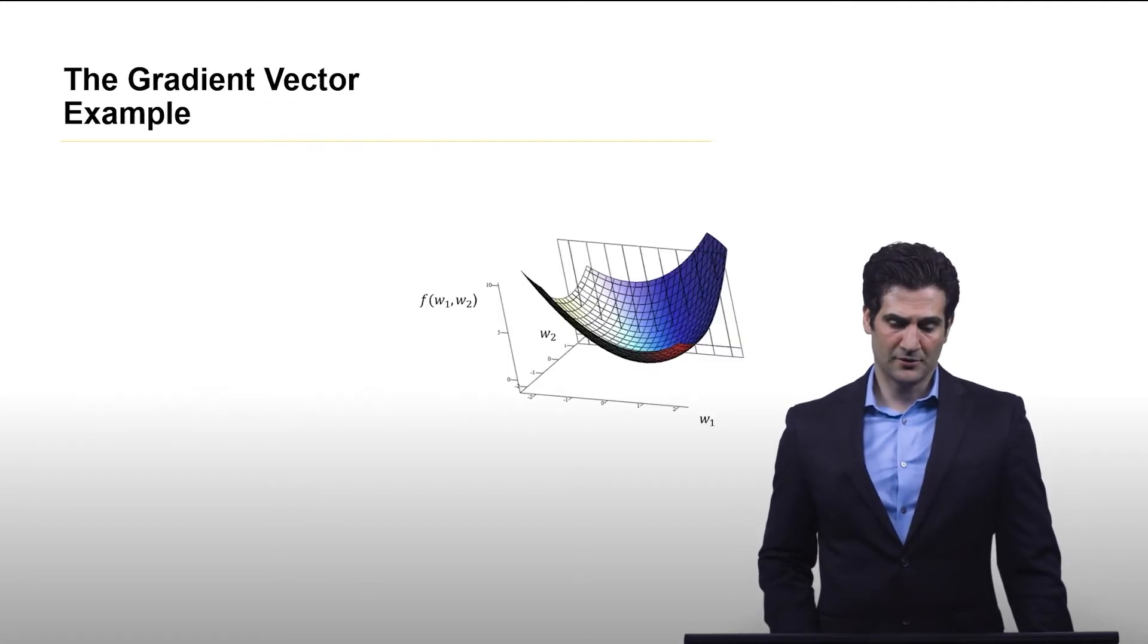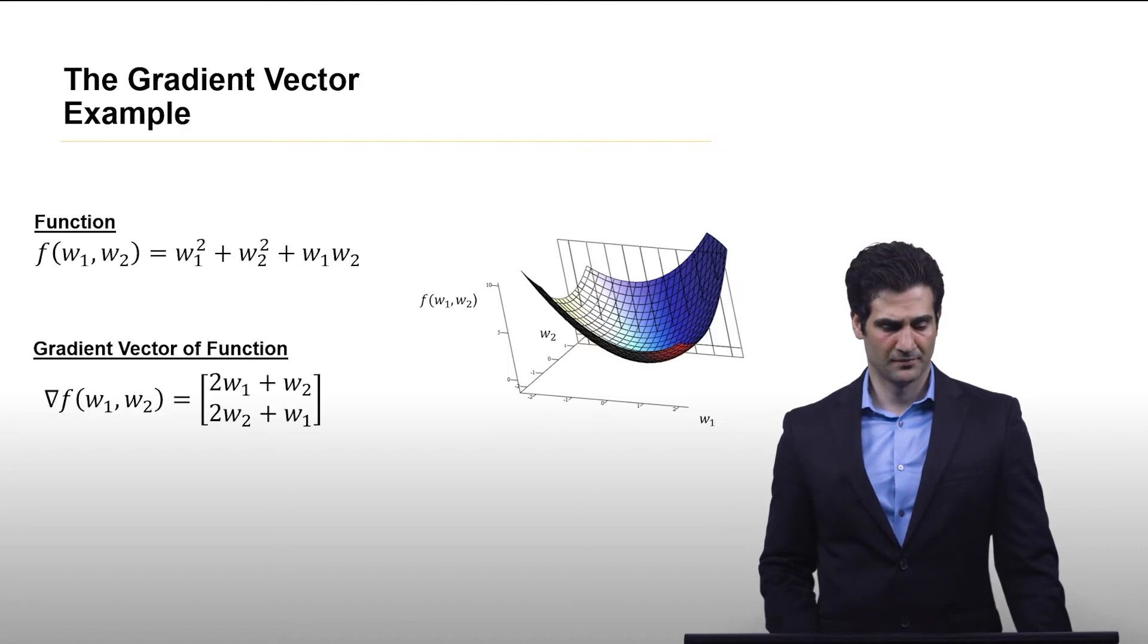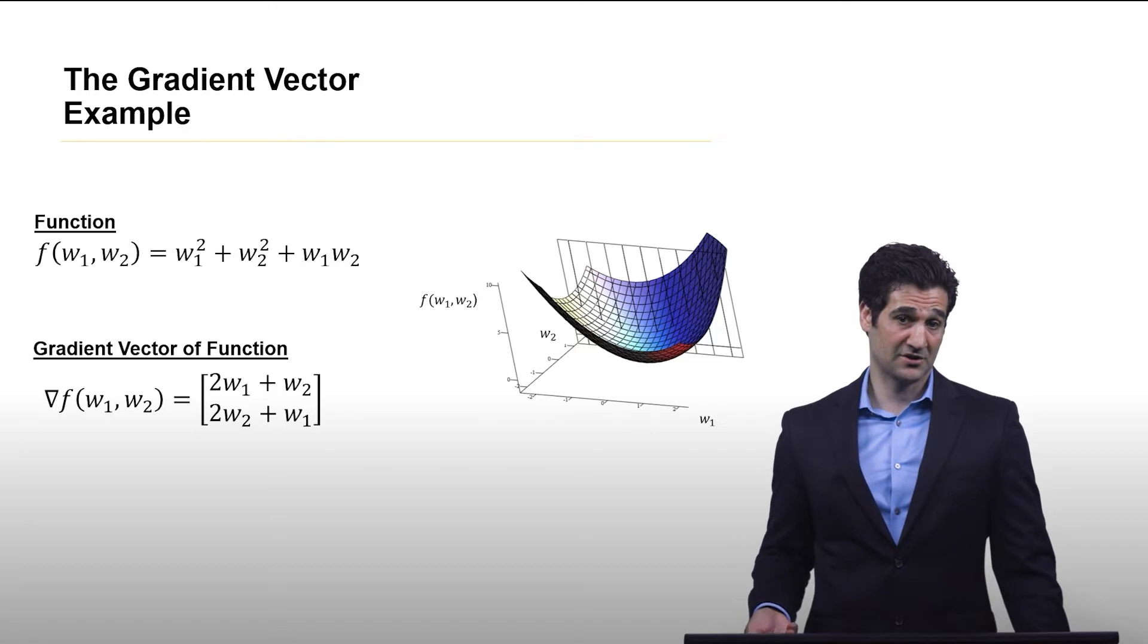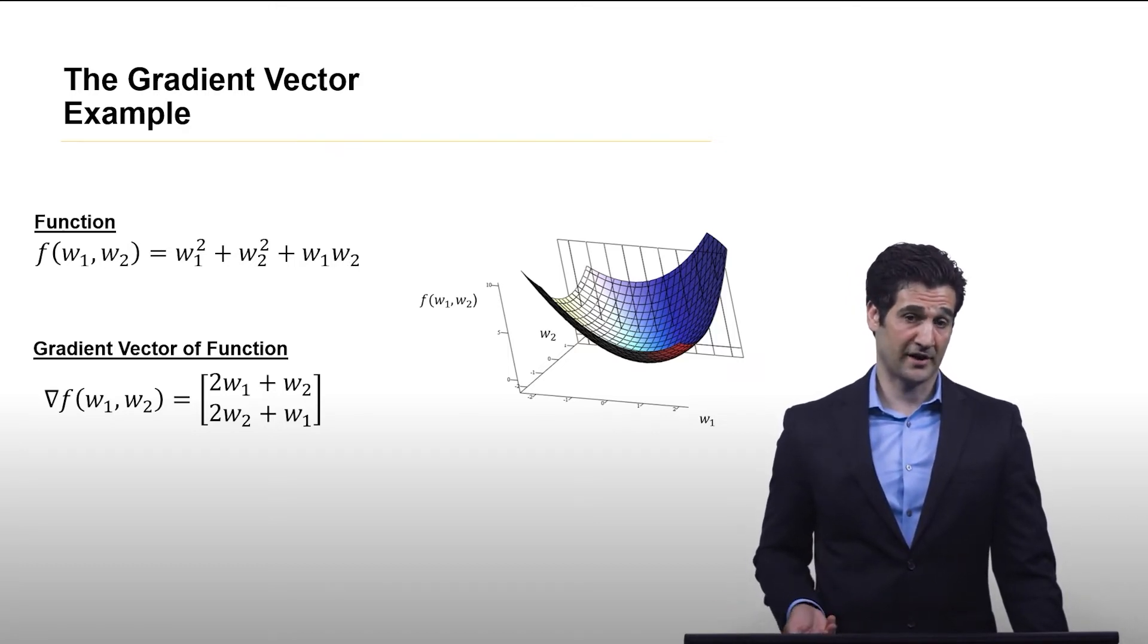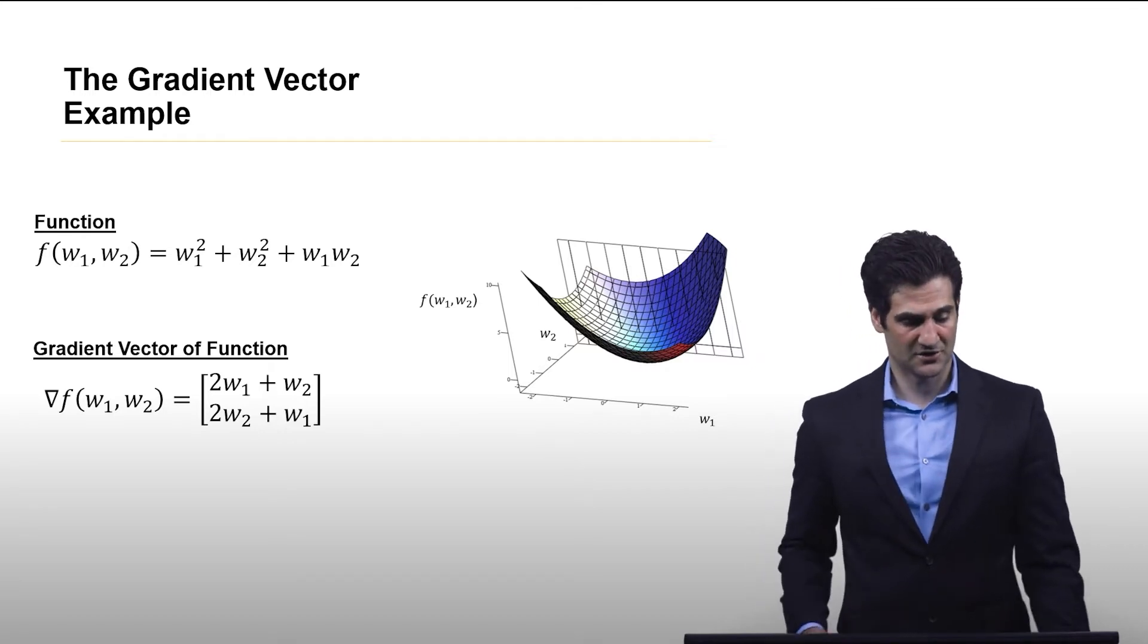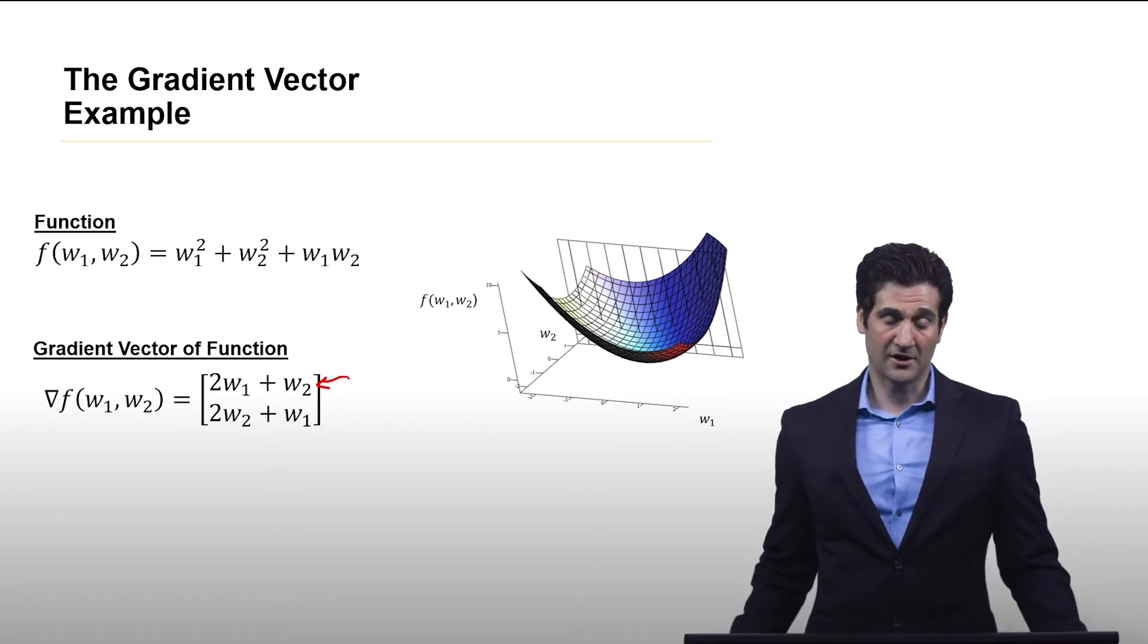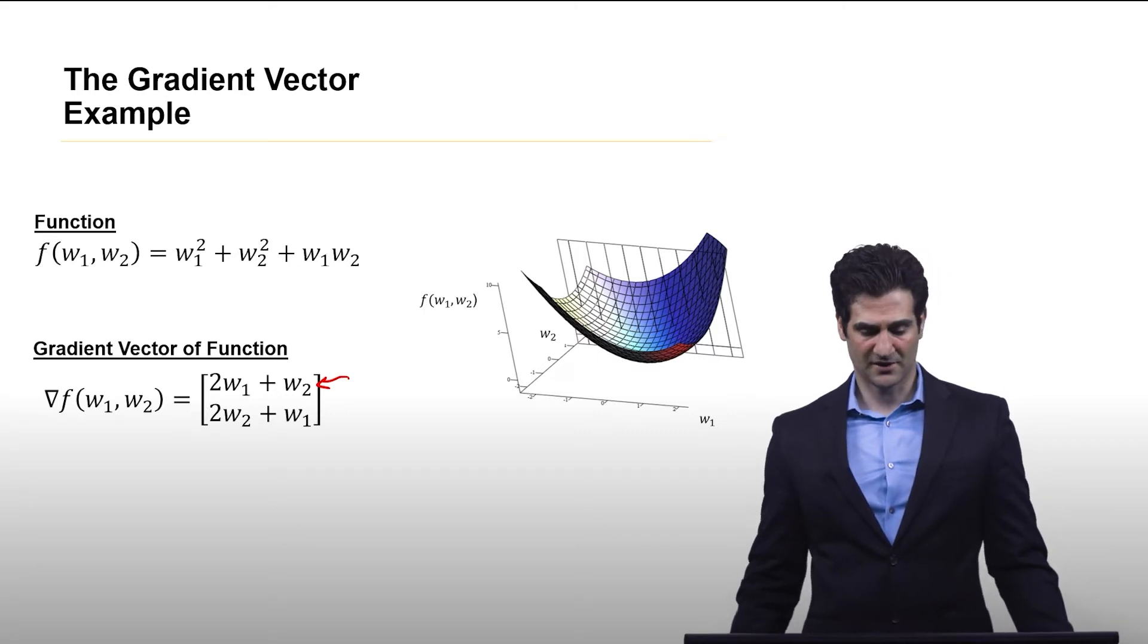So here's a quick example. We have this function. It's w1 squared plus w2 squared plus w1 times w2. And here's the associated gradient vector function. Notice that each position is associated with the partial derivative with respect to the parameter for that position. The top position here is the partial derivative with respect to w1. The bottom is the derivative with respect to w2.